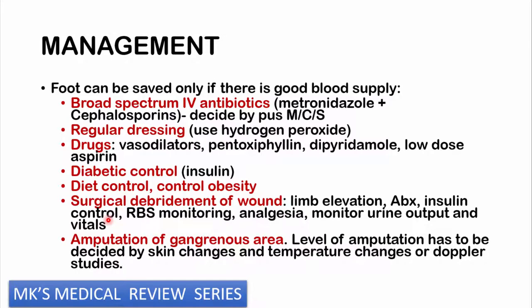In some cases, amputation of the gangrenous area may be necessary. Gangrene may be dry — a dark, stiff area — or wet, where there is a superadded infection. The level of amputation is decided by the demarcation of the gangrene, temperature changes, and Doppler studies. The rule of thumb is to amputate at a level where blood vessels are patent and infection has not yet spread.